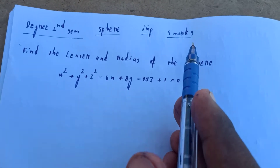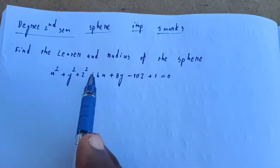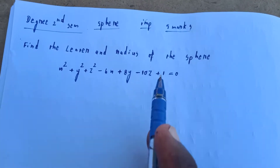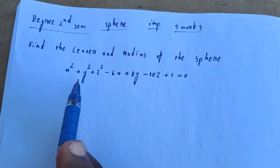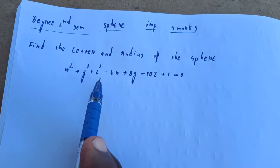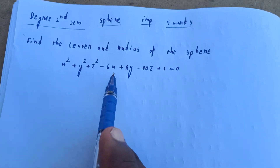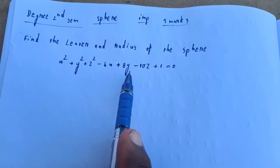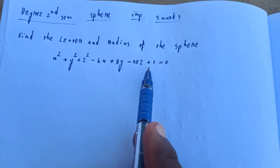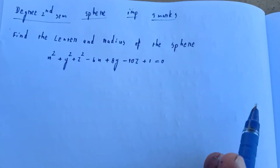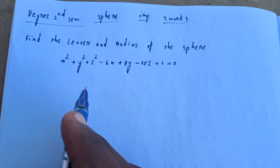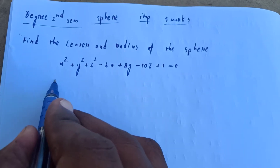Find the center and radius of the sphere: x squared plus y squared plus z squared minus 6x plus 8y minus 10z plus 1 is equal to 0.